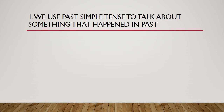Past simple tense is used to talk about past happenings. Jo aisi kaam jo maazi mein hote hoon ya hamne kiye hoon, wo jab hum English mein batana chahenge to past simple tense ka use karenge. Past simple tense kaise banta hai: subject plus second form of the verb plus object.